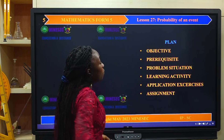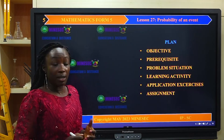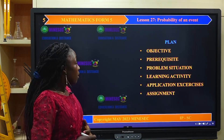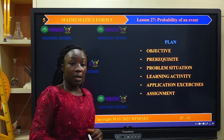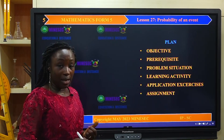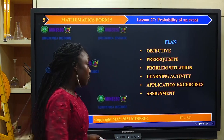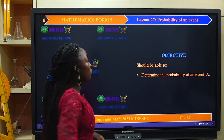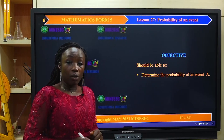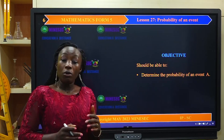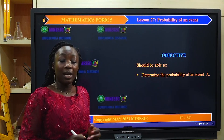As usual, we begin our lesson by looking at the objectives, the prerequisite problem situation, the learning activity, then application exercises, and we conclude the lesson with an assignment. The objective of this lesson is simply for you to be able to determine the probability of an event.